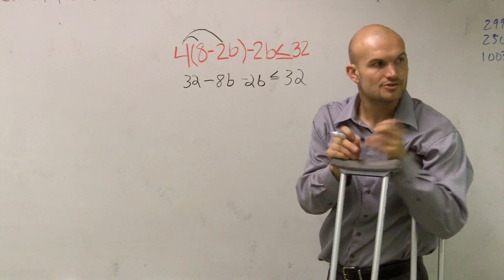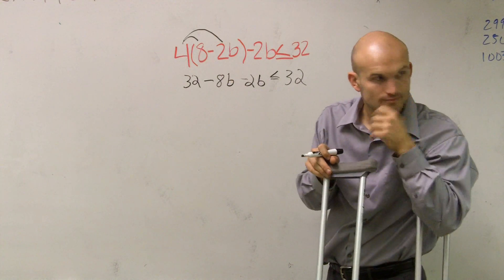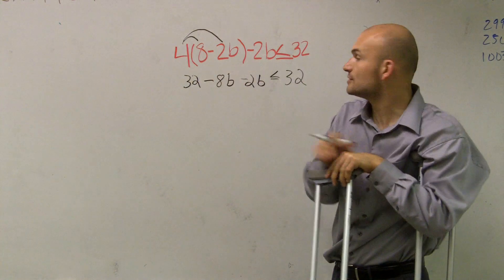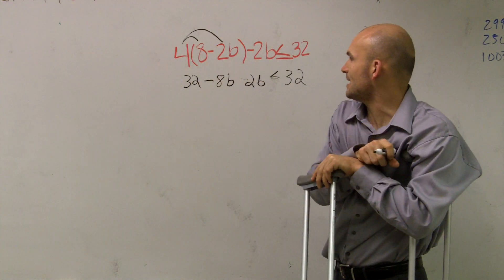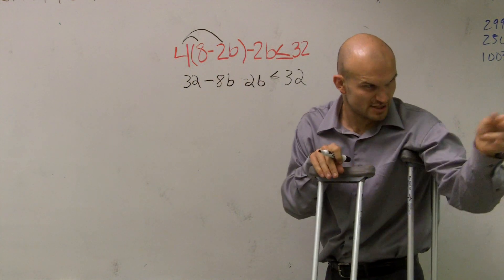All right. Dylan, could you move over there, please? So now what we have is 32 minus 8b minus 2b is less than or equal to 32.